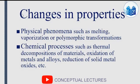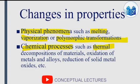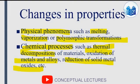Physical phenomena we can observe include melting, vaporization, and polymorphic transformations, while chemical processes include thermal decompositions, oxidation of metals and alloys, and reduction of solid metal oxides. These properties can change during the controlled temperature program, which can be studied to understand the thermal characterization and thermal analysis of materials.